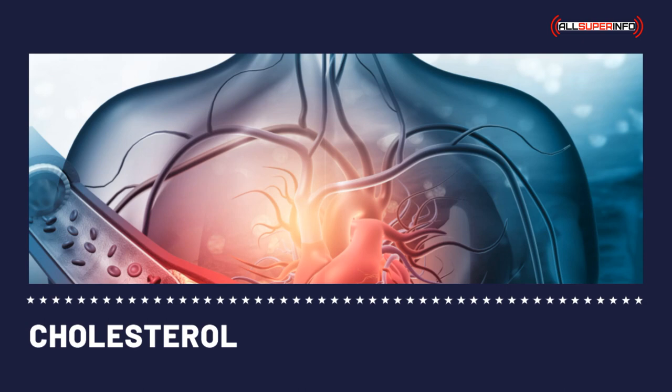There are two important cholesterol ratios: the LDL-HDL cholesterol ratio and the total cholesterol-HDL cholesterol ratio. In the latter, your result is given by dividing total cholesterol by HDL cholesterol. According to the American Heart Association, the desirable amount should be 5:1 or below, with an optimal amount of 3.5:1. The LDL-HDL ratio is done by dividing LDL cholesterol by HDL cholesterol, and the desirable amount should be 3.5 or below.